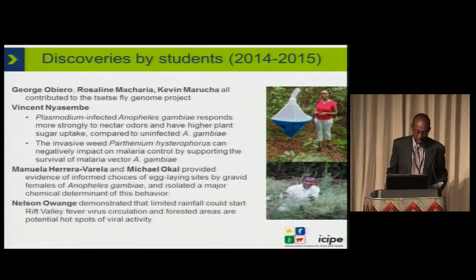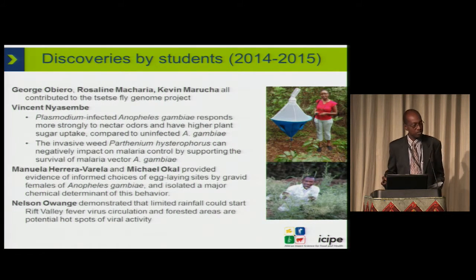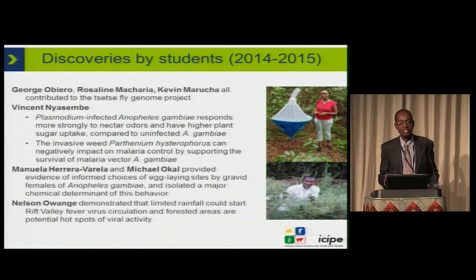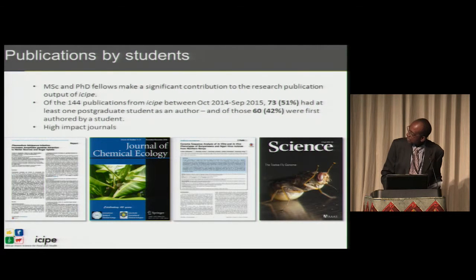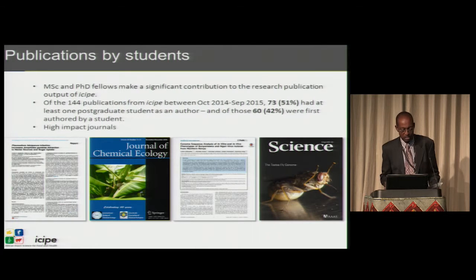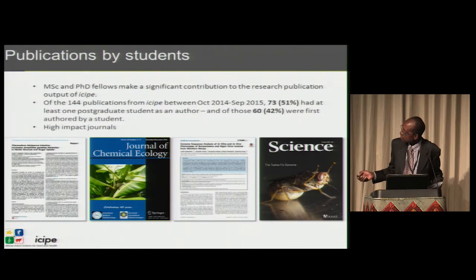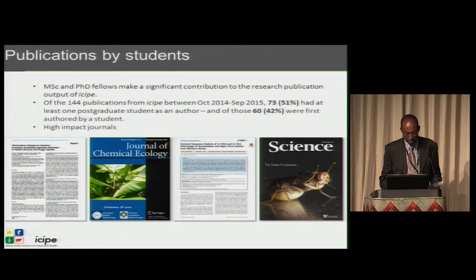Our students do good work. Manuela, for example, is from Colombia and did her PhD at ICIPE investigating how mosquitoes select where to lay their eggs — which has implications for mosquito control, because understanding that can lead to useful attractants, and studying what they avoid could lead to useful repellents. Some of our students publish really well. For example, we were part of the announcement of the genome of Glossina morsitans morsitans, one of the vectors of sleeping sickness. About 60% of these publications are by students as first authors, so we really do promote capacity building among our students.